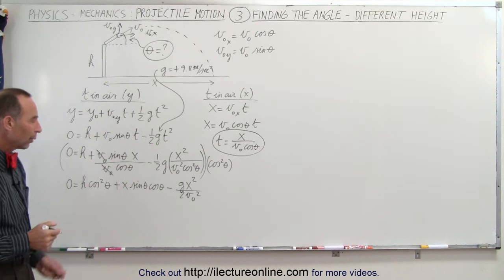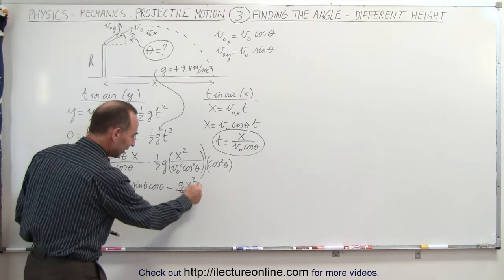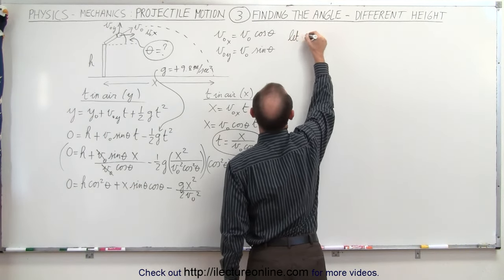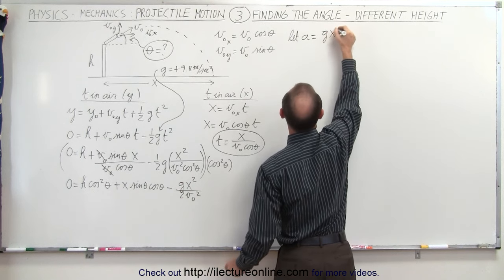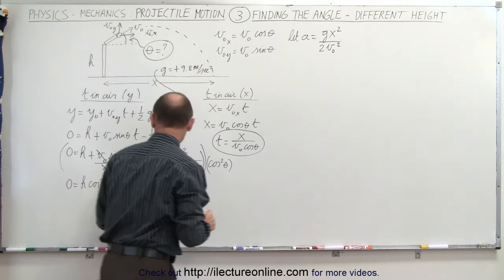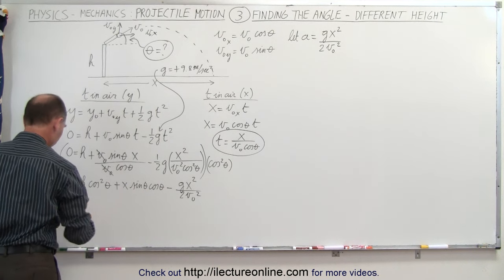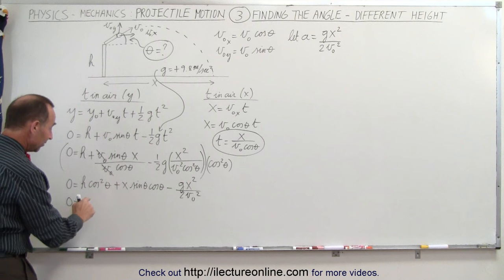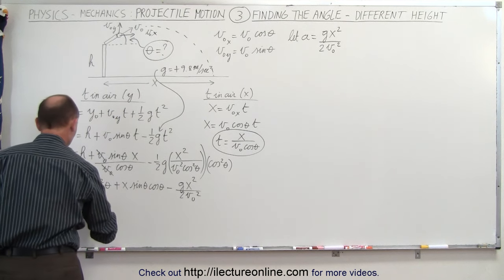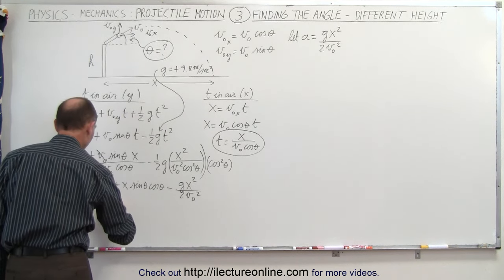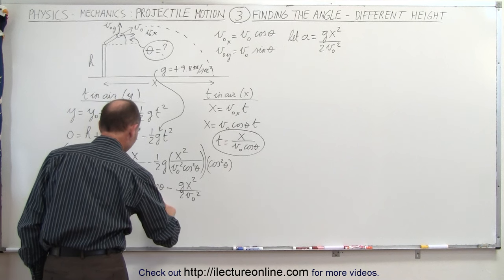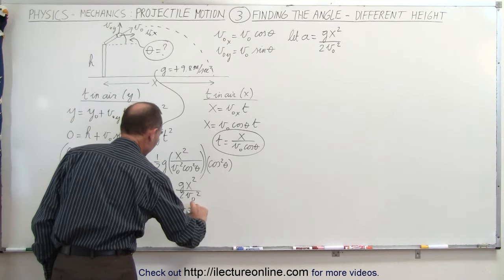To make things easier, we do a quick substitution: let a = gx²/(2v₀²). That makes the equation look cleaner. Also, instead of writing cos²(θ), we write it as 1 − sin²(θ). So the equation becomes: 0 = h·(1 − sin²(θ)) + x·sin(θ)·cos(θ) − a.